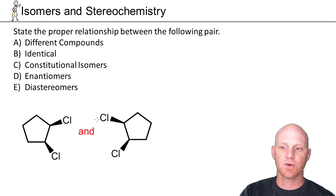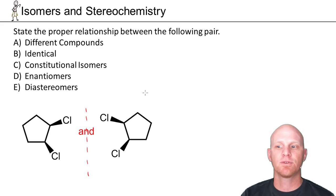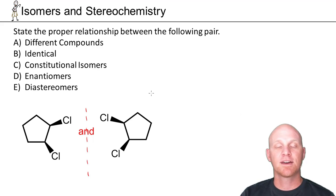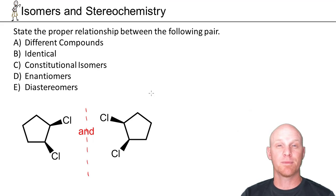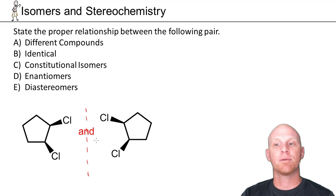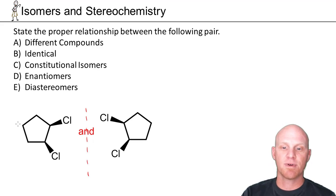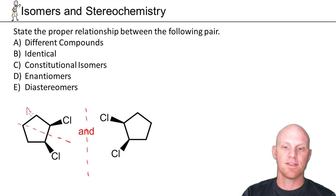Now look at the relationship of these two. You should notice right off the bat that there's a mirror plane here and that these are mirror images of each other. A lot of students just associate mirror image with enantiomers, but keep in mind: for chiral compounds, they and their mirror image are different. For achiral compounds, they and their mirror image are the same. The question really becomes not just are these mirror images, but are they mirror images and chiral, or mirror images and achiral? In this case, there are internal mirror planes of symmetry, which makes this an achiral compound.